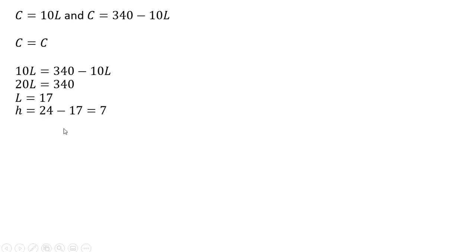Hours of leisure equals 17, and since there's 24 hours in a day, 24 minus 17 hours of leisure means there is 7 hours for work. The level of consumption here, just evaluate our consumption function when L equals 17.